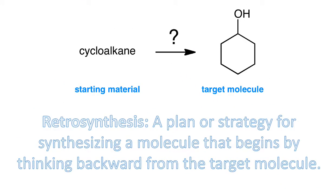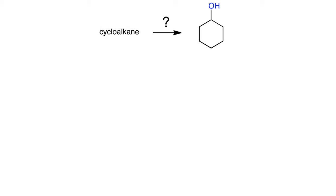A retrosynthesis is a plan or strategy for synthesizing a molecule that begins by thinking backward from the target molecule. Let's take a look at an example. Imagine that you want to make cyclohexanol, and the only requirement is that you have to make it from a cycloalkane — any cycloalkane that you want. In a retrosynthesis, we're actually going to begin at the end and ask ourselves a series of questions.